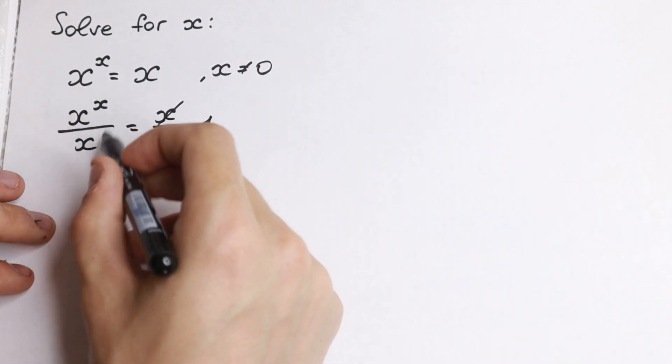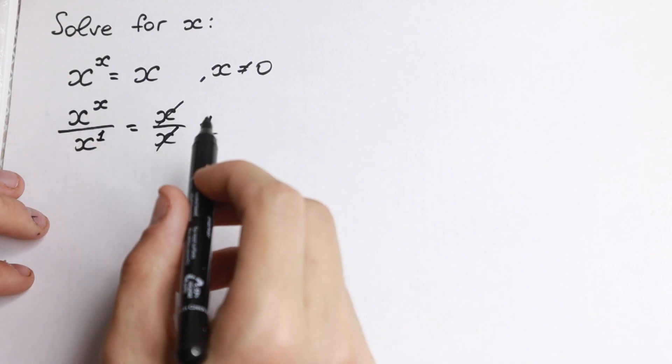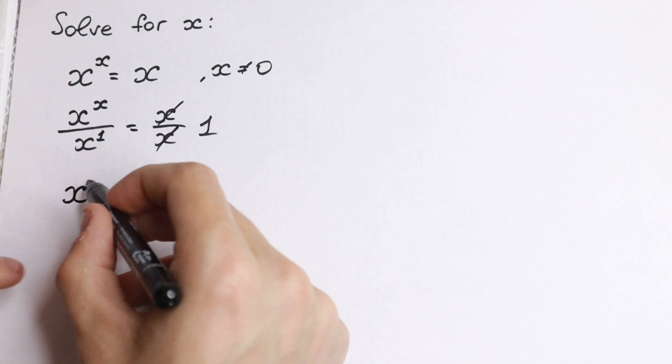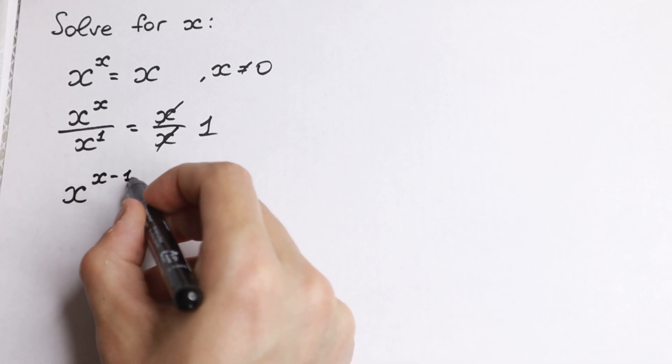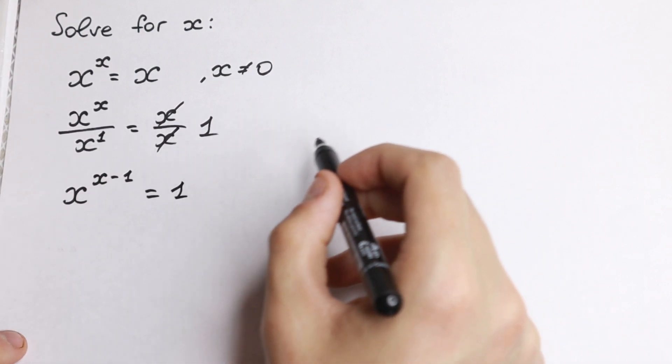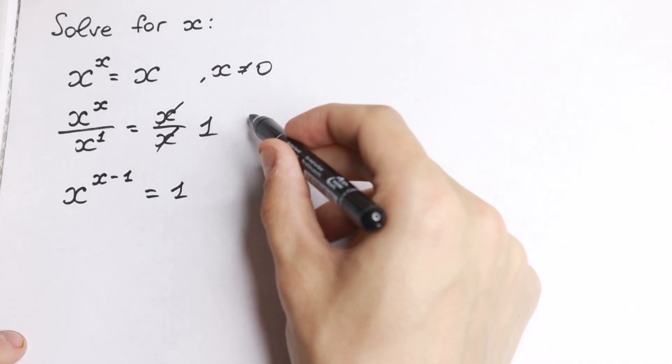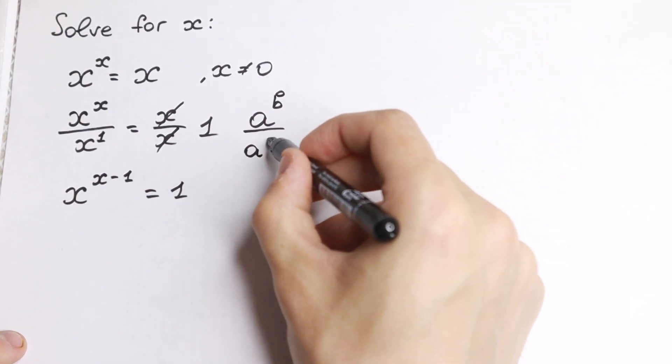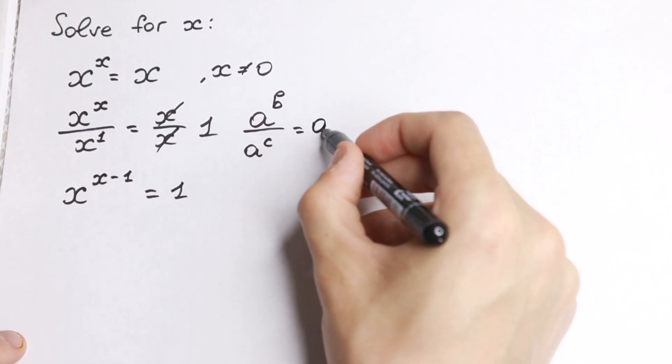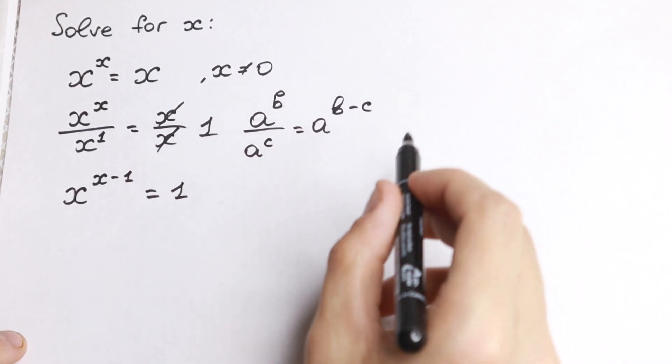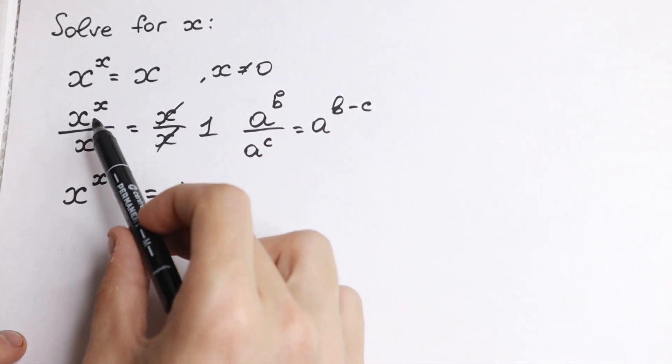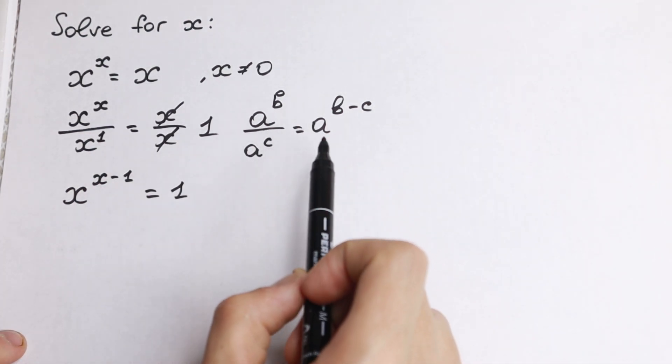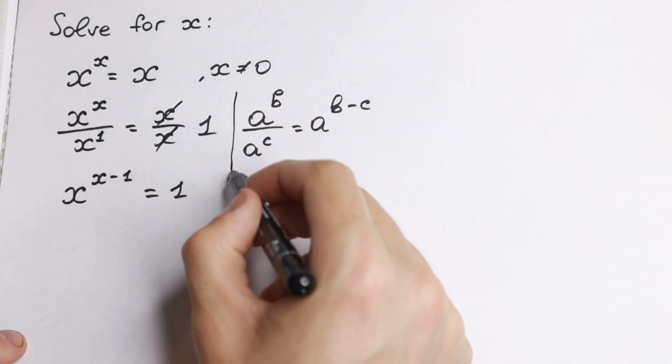But why this expression is really good? Because we can easily write it as x to the power x minus 1. Why we can write it? Because if we divide a to the power b by a to the power c, we can easily write it as a to the power b minus c. So if we have a fraction bar right here we have x minus 1. This brings in our denominator with the minus sign.